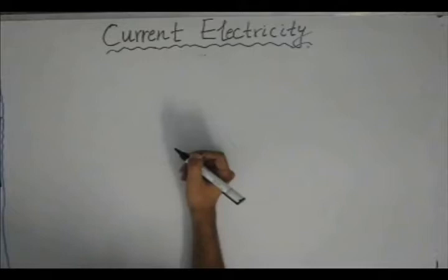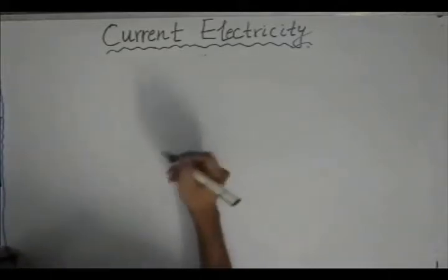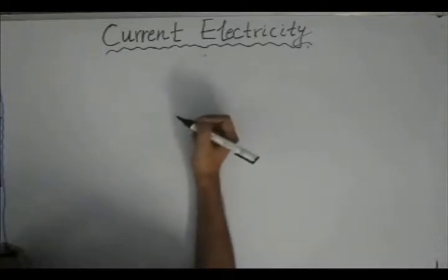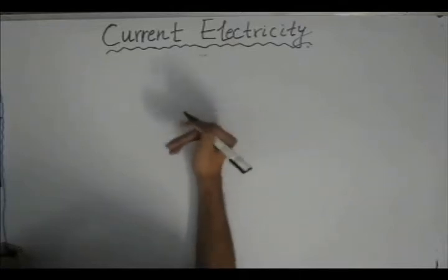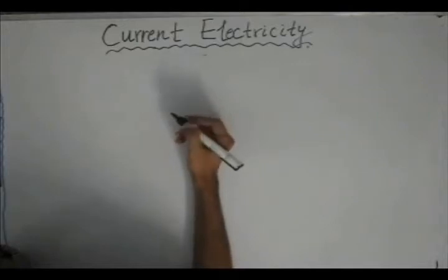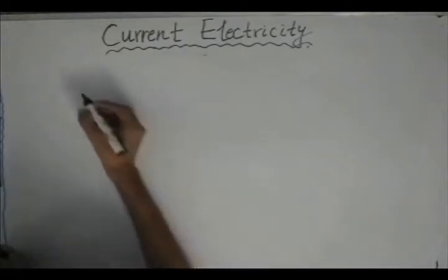Today we will be starting a chapter on current electricity, which is an extension to the chapter of electrostatics, wherein we studied the charges which were at rest and the effect of the charges on the field. Now here we will be studying the effect when the charges are in motion. We will start with an introduction to the chapter on current electricity.